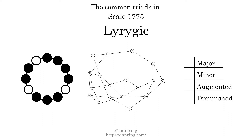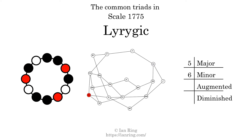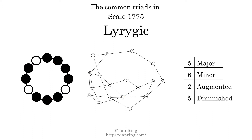The diagram in the center is a graph of parsimonious voice leading between triads. There are 5 major triads. There are 6 minor triads. There are 2 augmented triads. There are 5 diminished triads.